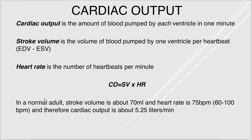Cardiac output is the amount of blood pumped by each ventricle in a minute, given by the equation: cardiac output equals stroke volume times heart rate. Heart rate is the number of heartbeats per minute, and stroke volume is the volume of blood pumped by one ventricle per heartbeat. This will vary from person to person.